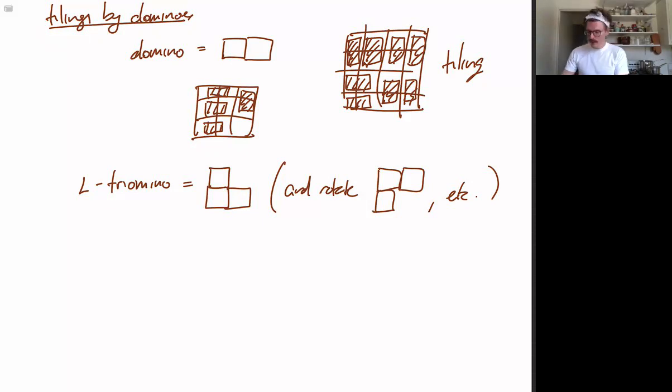So claim: any 2 to the n by 2 to the n checkerboard with a single square removed.